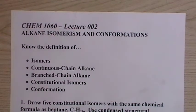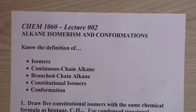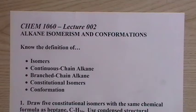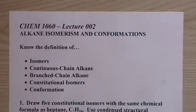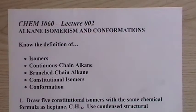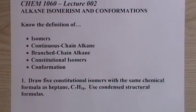Lecture two: isomerism. This tends to get students. What we're trying to do is create a molecule that has different bonding than another molecule, but it has the same formula — same number of carbons, same number of hydrogens. Later on we'll add oxygens and other atoms, but right now we're just dealing with hydrocarbons.